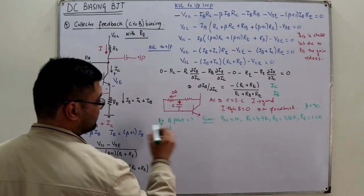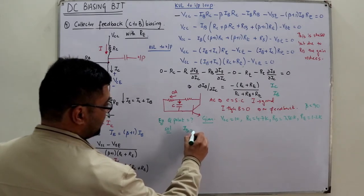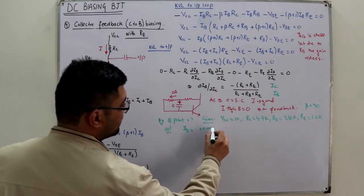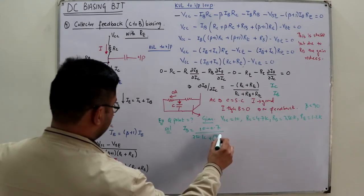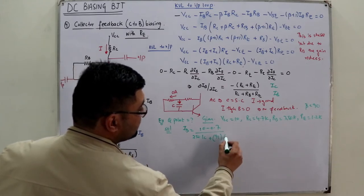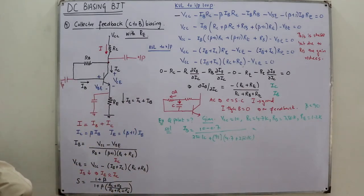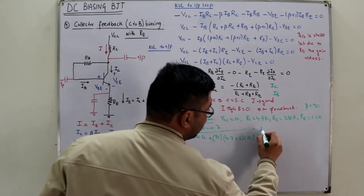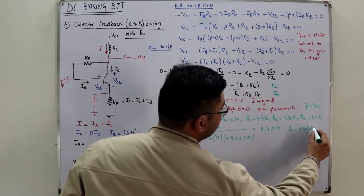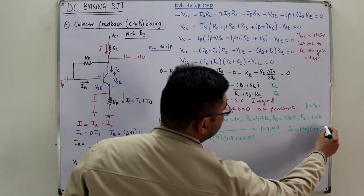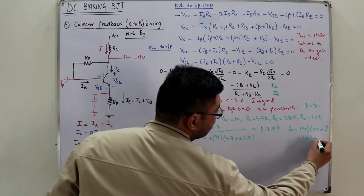Solution: IB = (VCC − VBE) / [RB + (β+1)·(RC + RE)] = (10 − 0.7) / [250K + 91·(4.7K + 1.2K)] = 11.91 μA. Then IC = β·IB = 90 × 11.91 μA = 1.07 mA.